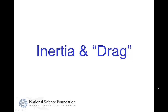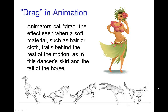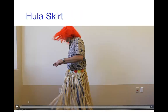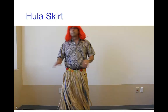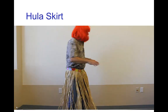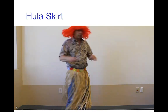Inertia and drag. Animators call 'drag' the effect you see when something soft like hair, cloth, or soft flesh seems to trail behind the rest of the motion. You can picture this in a dancer's skirt or the tail of a horse as it's moving. In a short video, you can see the drag in the skirt and in the hair.